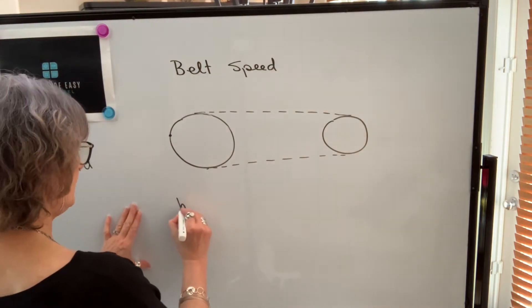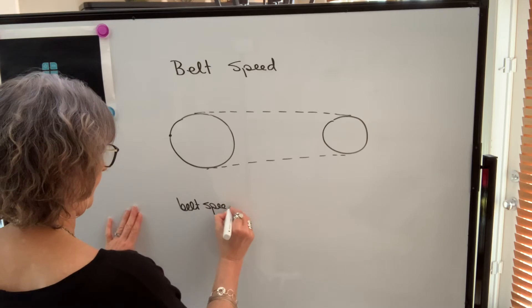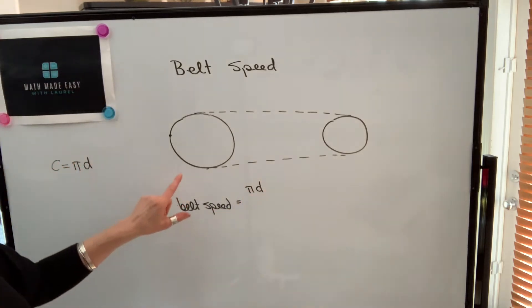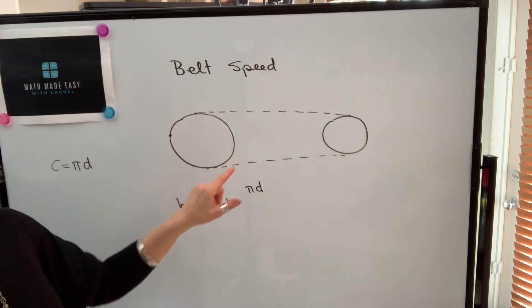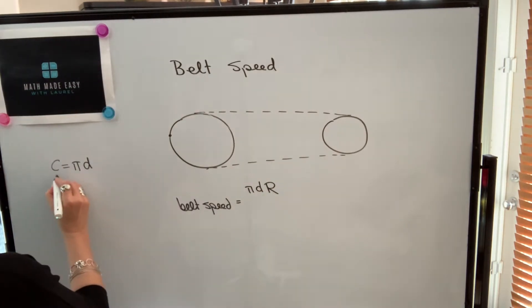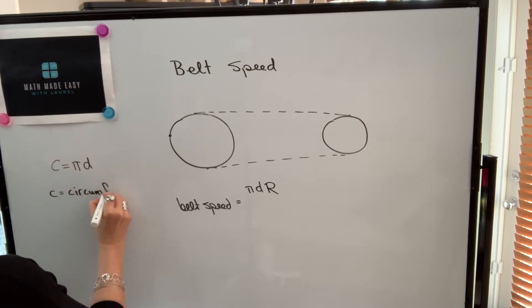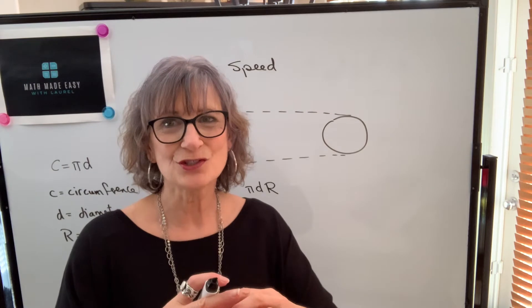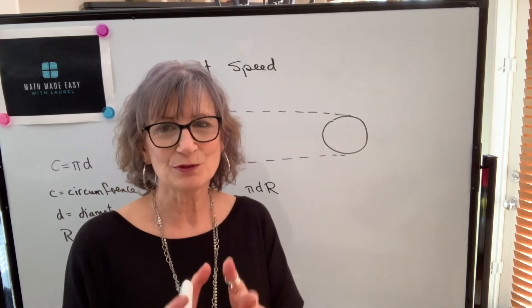So to find belt speed, I start with the circumference, so pi times d. And then I need to multiply by the revolutions per minute. So I'll just call that capital R. So here, C represents the circumference. D represents the diameter. And capital R represents RPM. You can write RPM, but you just have to be careful and understand that that just represents one variable, not three separate variables because of the three letters.